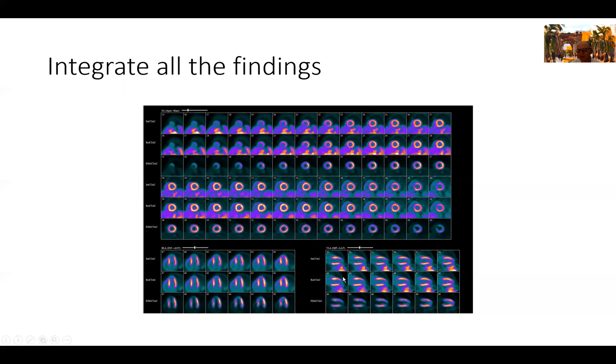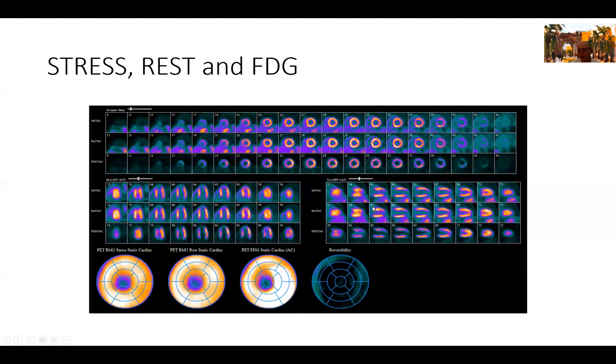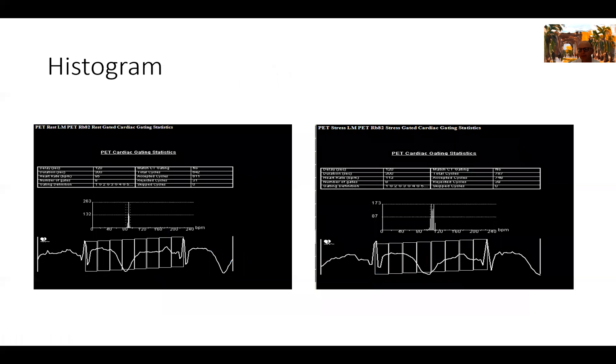Finally, before I go to report the case, I usually look at all the images combined. So we have the FDG on the bottom, rest in the middle, and the stress on top. And you can see this matched defect all across the three sets of images indicating scar in the LAD territory involving the apex. This is how it looks on the 17-segment model display, a perfectly matched defect. It's almost like a fingerprint of the heart. So we know that this is the same patient just from looking at where the defect is and the fact it doesn't change from rest to stress to FDG.